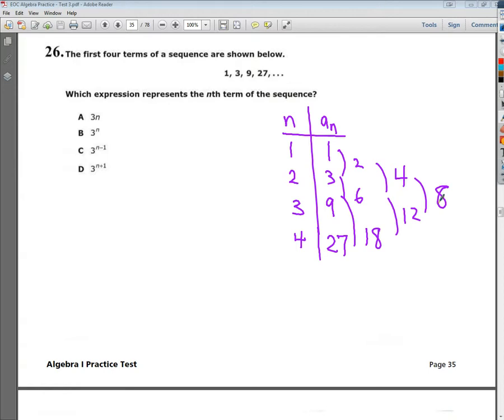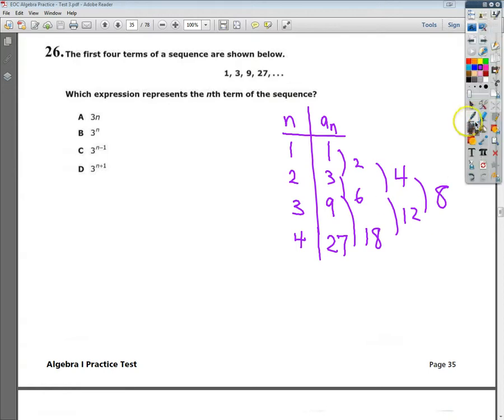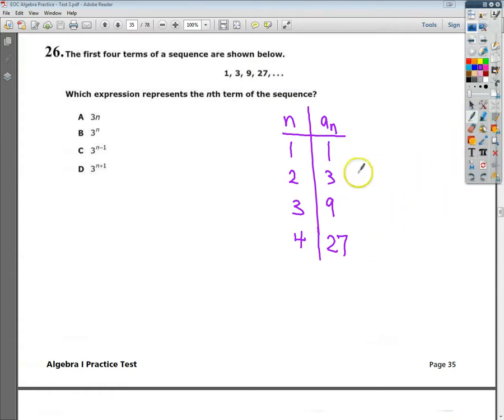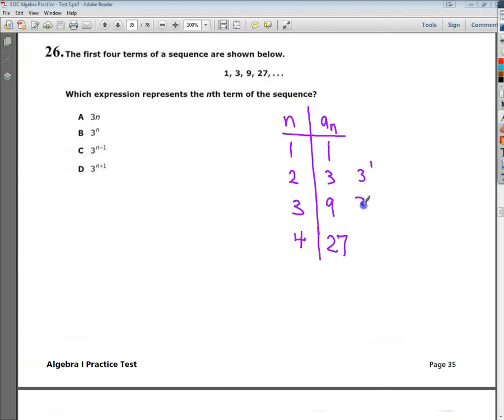That's obviously not the case here. So what I'm looking at is, well, like I said before, I know that this is 3 to the first power, 3 to the second power, 3 to the third power. So I've got to make some adjustment, some relationship between these numbers, the exponent and the value of the term.